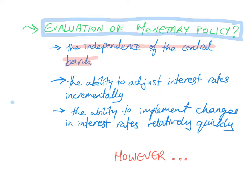Another strength of monetary policy is the ability to adjust interest rates incrementally. The central bank doesn't have to cause big changes in interest rates — it can gradually raise or lower them and observe how the economy responds. This flexibility doesn't exist with fiscal policy, because changes in taxes and government spending often have to go through a laborious political process.